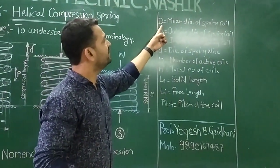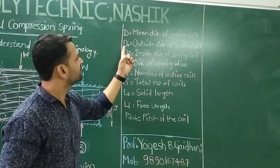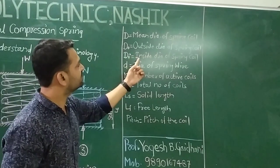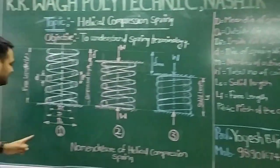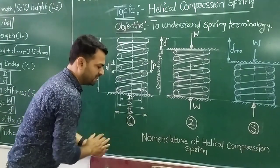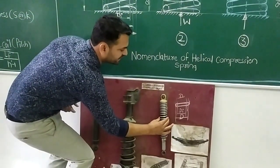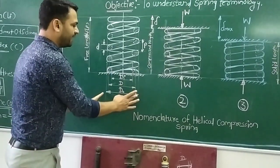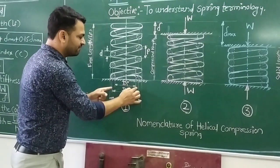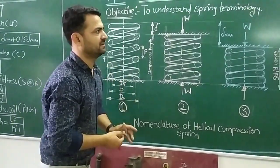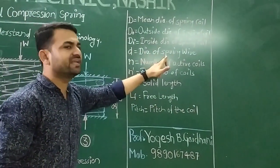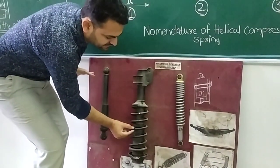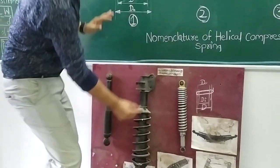Capital D is the mean diameter of the spring coil. DO is the outside diameter of the spring coil, and DI is the inside diameter of the spring coil. The mean of outside and inside diameter is D — the mean coil diameter. Small d is the diameter of the spring wire itself, which is the wire you can hold and measure.